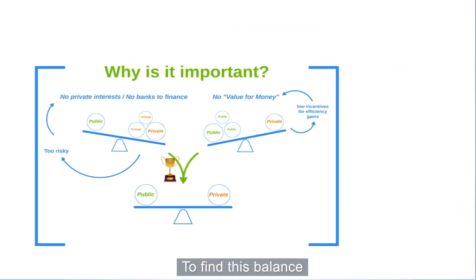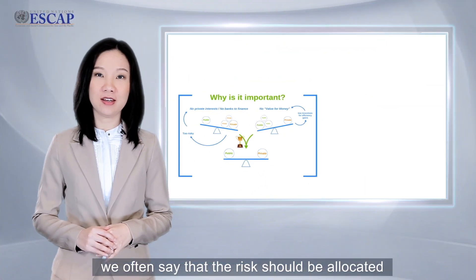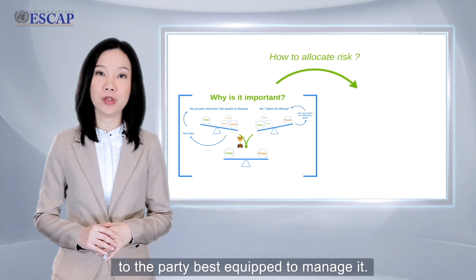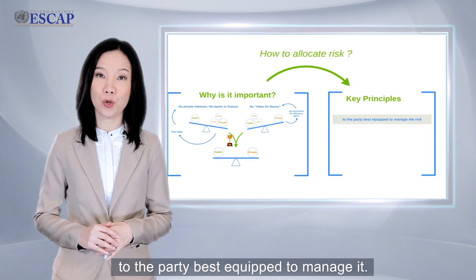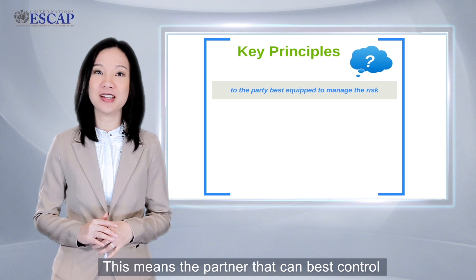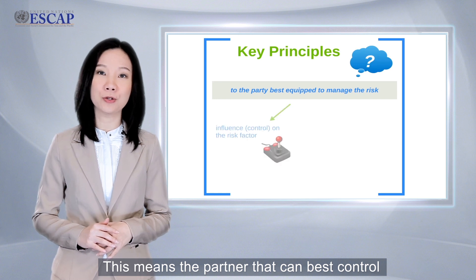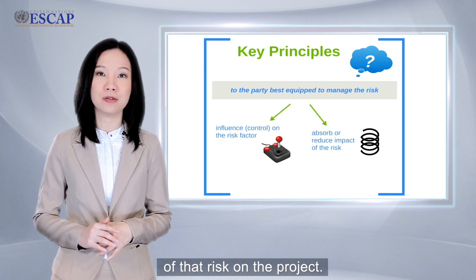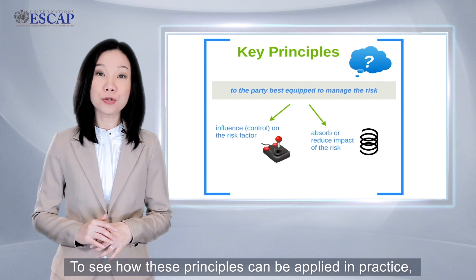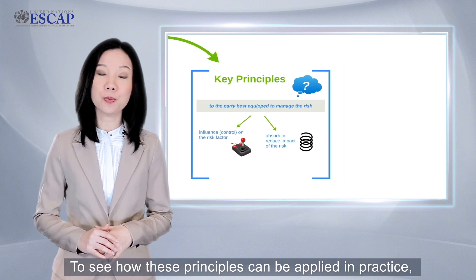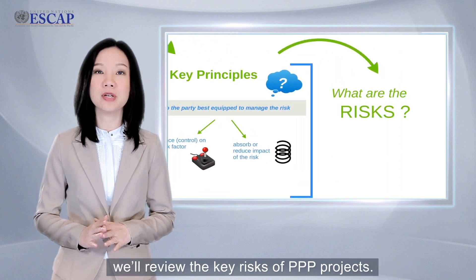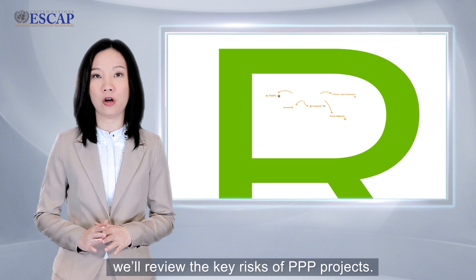To find this balance, we often say that risk should be allocated to the party best equipped to manage it. This means the partner that can best control the risk or reduce the impact of that risk on the project. To see how this principle can be applied in practice, we will review the key risks of PPP projects.